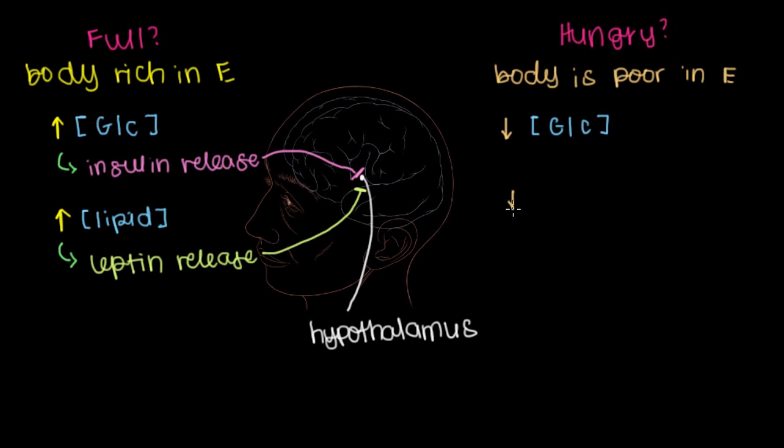Which means that when lipid concentration is low, you're not going to be releasing leptin and you're not going to be inhibiting the hypothalamus. Now the final thing that talks to our brain is our stomachs. After we've eaten a bunch, our stomach will be pretty full with food.